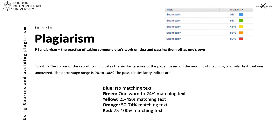When you submit your work, you get a similarity score and a coloured bar. Blue means you literally have no matching text — amazing, but really uncommon. Green is what you're aiming for: between one word and 24% of your text matching. Yellow is 25% to 49%, orange is 50% to 74%, red is 75% to 100%. Obviously, the less similar the better.